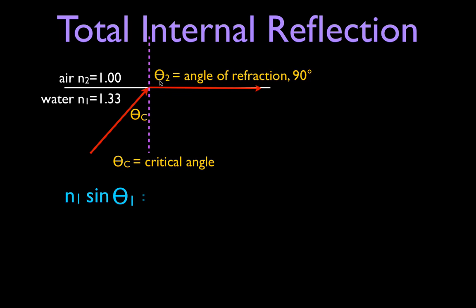We want to go through and see how we can calculate that angle, and first we're going to derive the equation for the critical angle. The critical angle is just a particular angle of incidence — a special angle of incidence that produces an angle of refraction of 90 degrees. So this is Snell's law: N1 times the sine of theta 1 equals N2 times the sine of theta 2, where the N1/theta 1 side is the incident side and the N2/theta 2 side is the refracted side. We want to know what angle of incidence will produce an angle of refraction of 90 degrees, so I'm going to replace theta 1 with theta C — the critical angle — that produces an angle of refraction of 90 degrees.